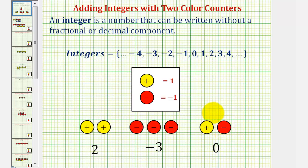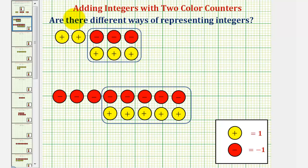There's also more than one way to represent integers. If we take a look at all these chips together, notice how the three red counters and three yellow counters would result in zero, leaving us with two yellow counters for positive two. All of these chips could be used to represent positive two.